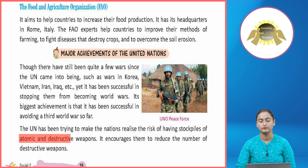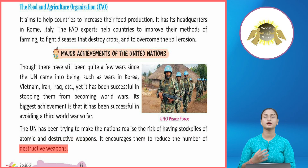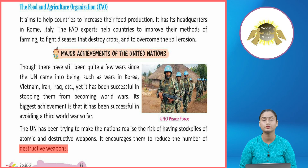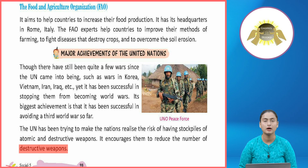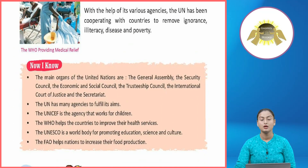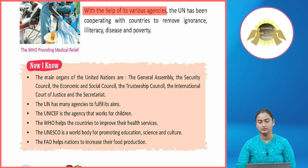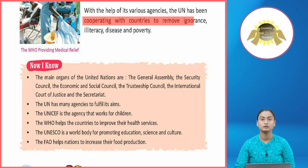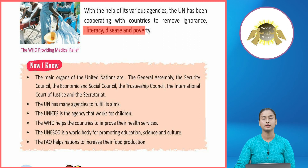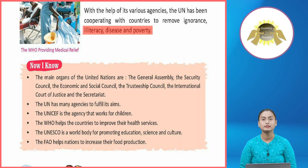The UN has been trying to make nations realize the risk of having stockpiles of atomic and destructive weapons. It encourages them to reduce the number of destructive weapons. UN alag-alag countries mein yeh awareness phela rahi hai ki atomic stocks aur destructive weapons bilkul bhi sahih nahi hain aur jitna ho sake unko kam karein. With the help of its various agencies, the UN has been cooperating with countries to remove ignorance, illiteracy, disease, and poverty.